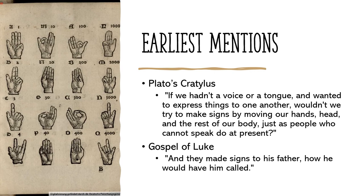Now that we've defined some terms, let's talk about pre-medieval examples of sign language. The oldest example in the western canon is probably Plato's Cratylus, in which Socrates says: 'If we hadn't a voice or a tongue and wanted to express things one to another, wouldn't we try to make signs by moving our hands, head, and the rest of our body, just as people who cannot speak do at present?' A later example comes from the Gospel of Luke, where they're talking about Zacharias, the father of John the Baptist, who had been struck mute. 'And then they made signs to his father, how he would have him called.' The Greek word translated as 'signs' here means to nod or to communicate without words — so it is signs as we understand the term today.